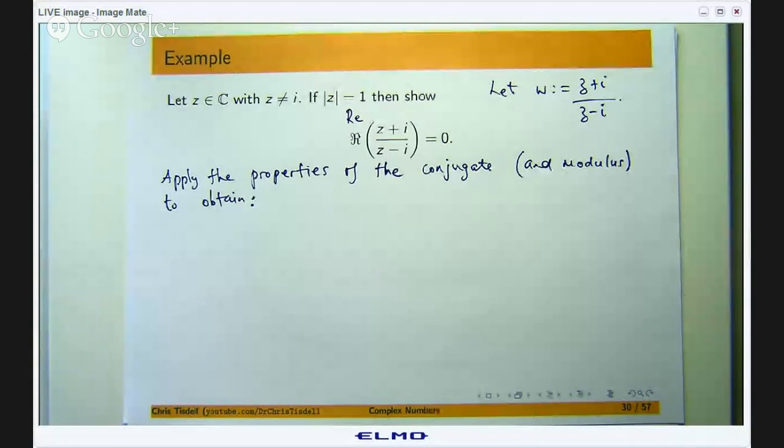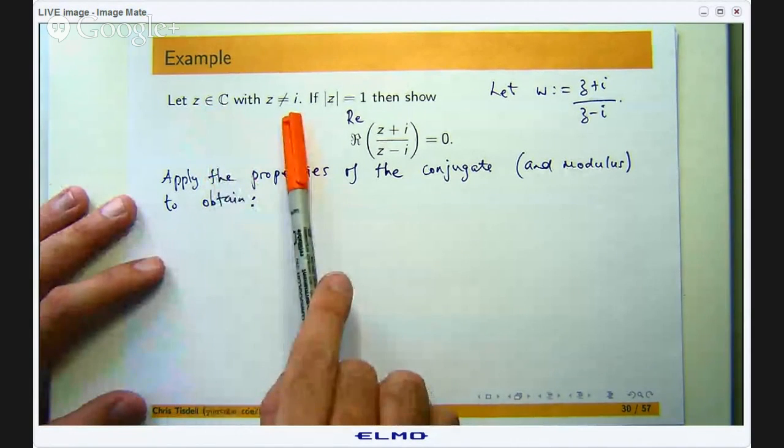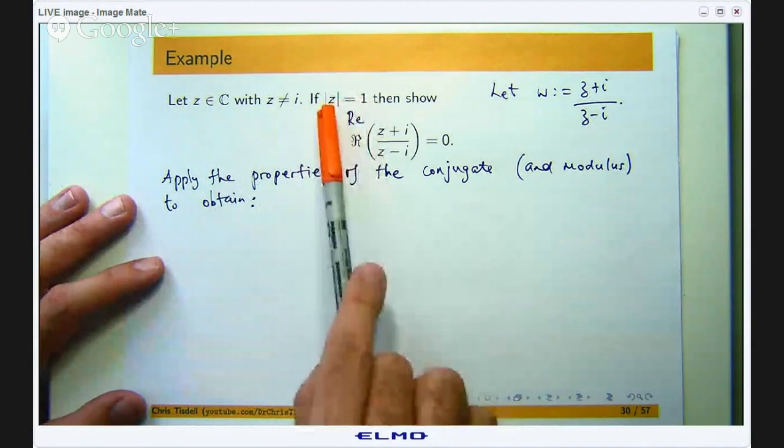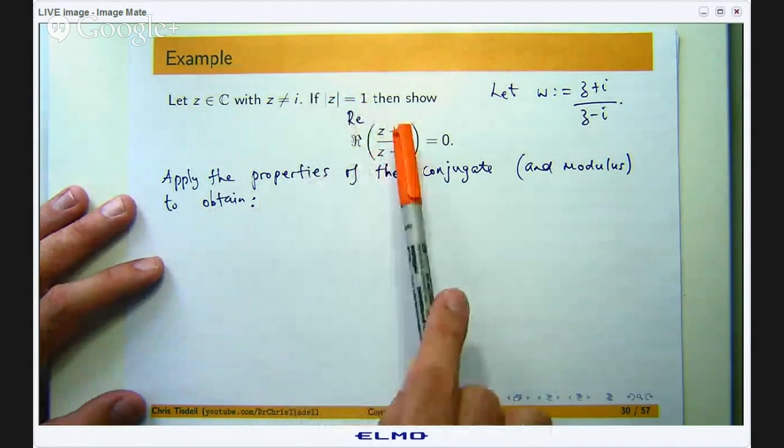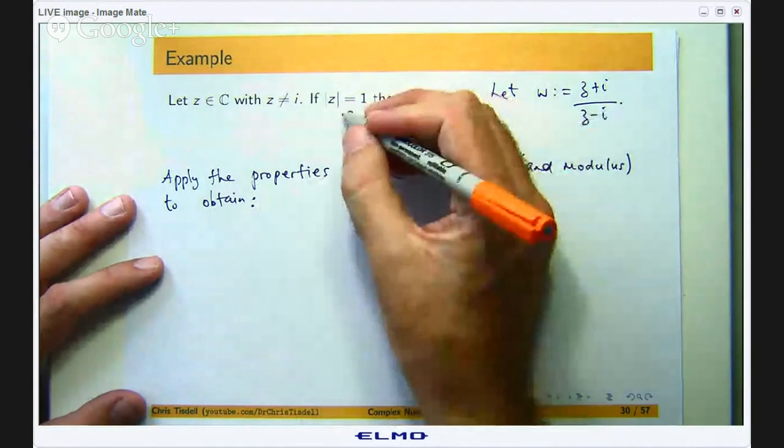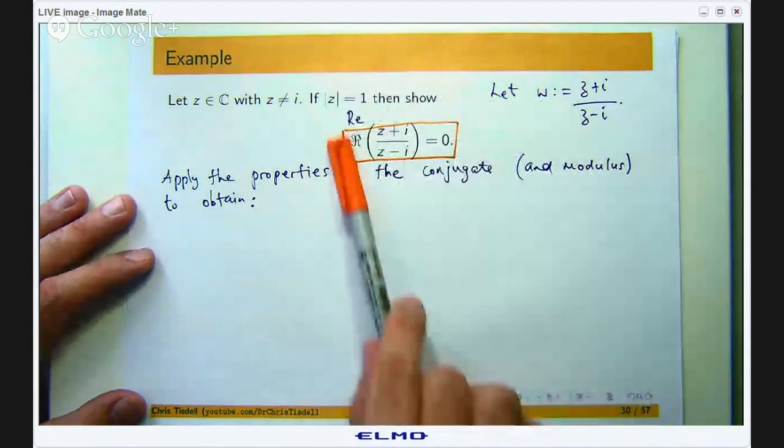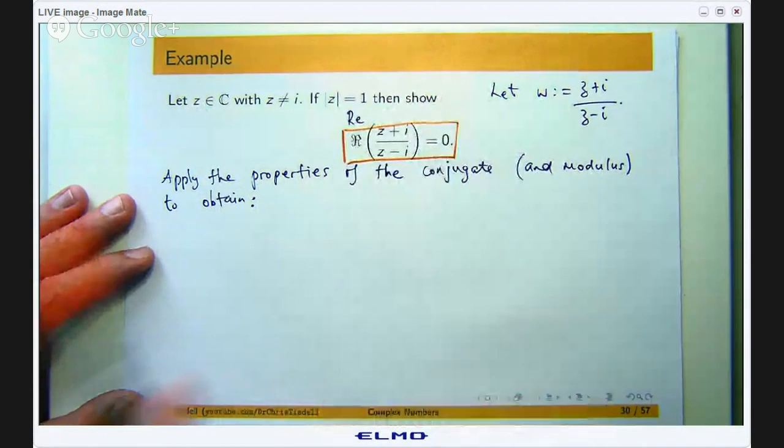So here is the idea. Suppose z is a complex number with z not being equal to the imaginary unit. If the modulus of z is 1, then show the real part of this quotient is 0. So under these assumptions this is what we are trying to prove.